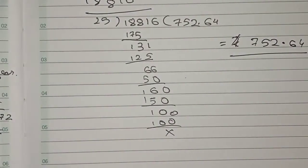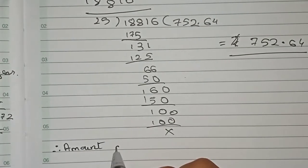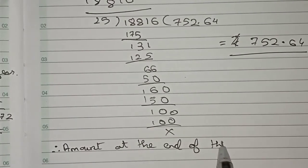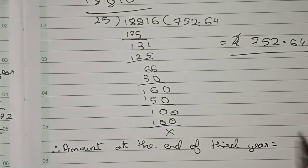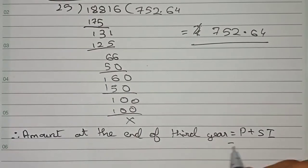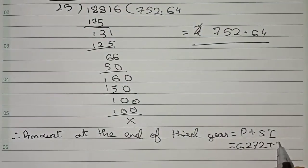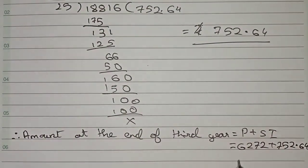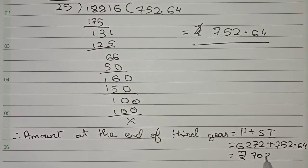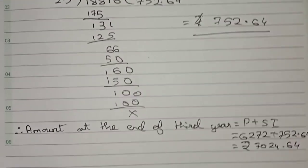Now for the last part, the amount at the end of the third year equals principal plus SI, so that is 6272 plus 752.64, which equals rupees 7024.64. This is the amount at the end of the third year.